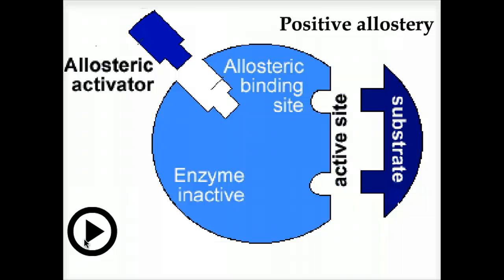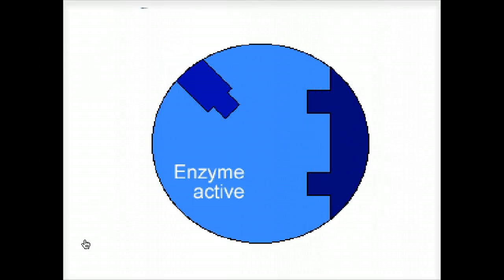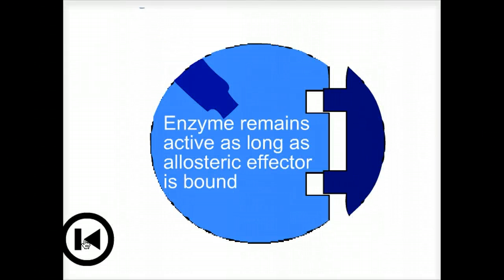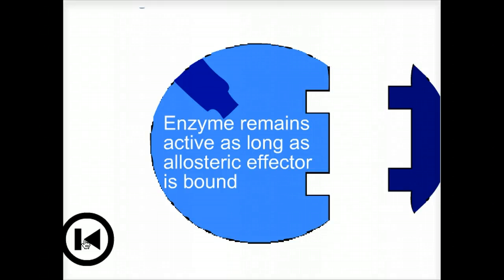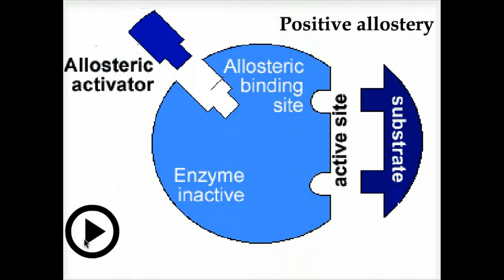In the case of a positive effector, in the absence of the allosteric regulator, the enzyme is inactive. Binding of the regulator to the enzyme changes the state — the structure of the enzyme — and now the enzyme can catalyze the reaction. In the absence of the regulator, the enzyme again is inactive.